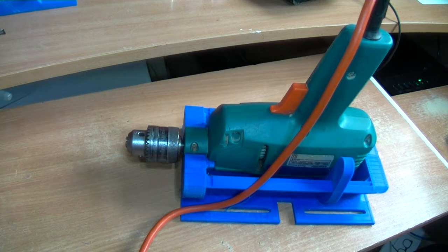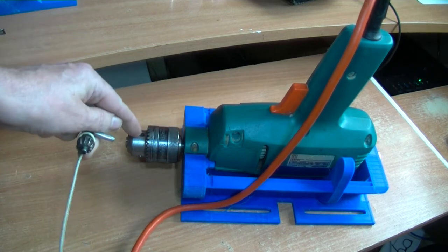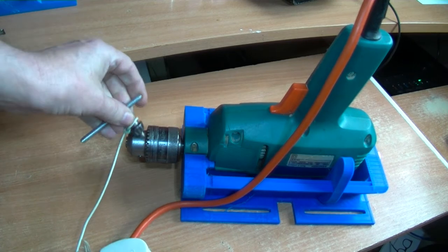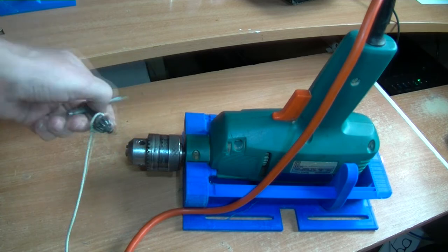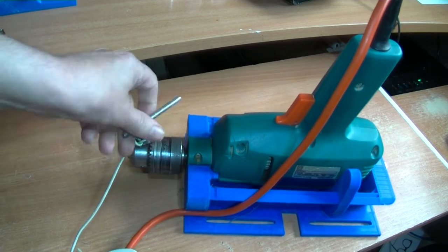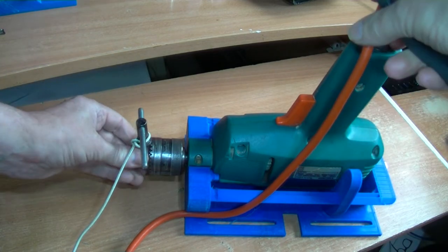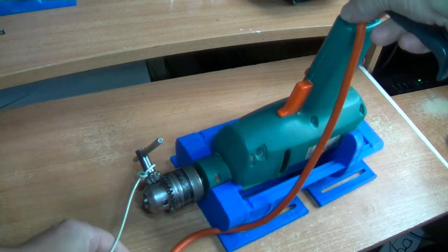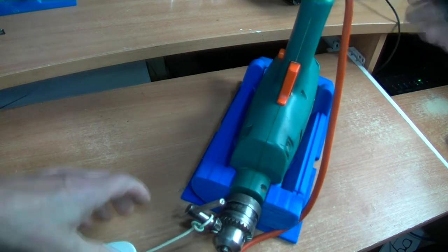The best way to remove the chuck is, actually, you put the key in one of these holes here. As I say, the key works as a gear. You can tighten it up on a twist bit by hand, and then you want to tighten it up with a key. In this case, modern drills generally don't have keys.